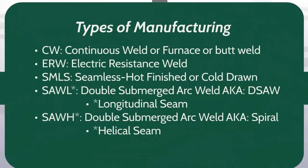Now let's review different types of pipe manufacturing. CW — continuous weld, or furnace or butt weld. ERW — electric resistance weld. SMLS — seamless, hot finished or cold drawn. SAWL — double submerged arc weld, also known as DSAW. SAWH — double submerged arc weld, also known as spiral. Note that DSAW pipe has a longitudinal seam, while spiral pipe has a helical seam.